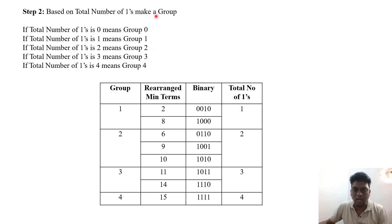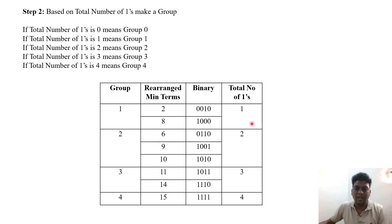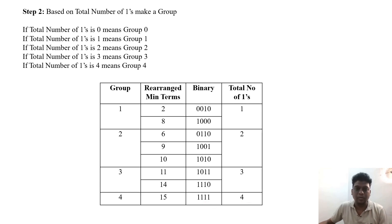In Step 2, based on the number of ones we form groups. The total number of ones present are 1, 2, 3, and 4, so we classify into Group 1, Group 2, Group 3, and Group 4 — we can name them A, B, C, D or any label. When the number of ones is 1 it goes to Group 1; 2 ones means Group 2; 3 ones means Group 3; 4 ones means Group 4. So minterms 2 and 8 go to Group 1; 6, 9, 10 go to Group 2; 11 and 14 go to Group 3; and 15 goes to Group 4.